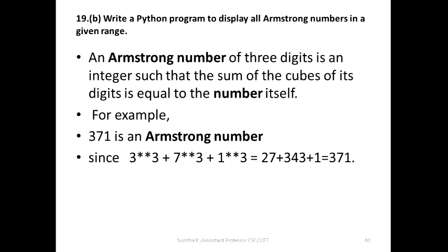For example, a three-digit Armstrong number is one where the sum of the cubes of each digit equals the number itself. For example, 371: three-cube plus seven-cube plus one-cube equals 371 — that is the same number. Such numbers are called Armstrong numbers.